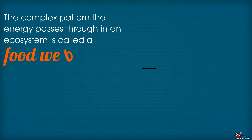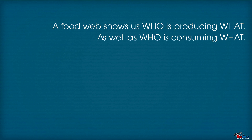The complex pattern that energy passes through in an ecosystem is called a food web. A food web shows us who is producing what, as well as who is consuming what.